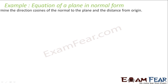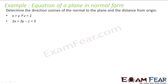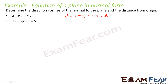Let us take an example. Here you define the direction cosine, normal of the plane, and the distance from the origin where the equation of the plane is given. We have two examples here. The first is x plus y plus z is equal to 1. We compare this equation with the standard form: Lx plus My plus Nz is equal to d, where L² plus M² plus N² is equal to 1. This is the equation of the plane.